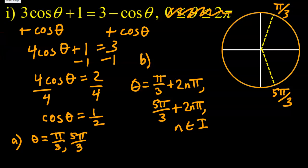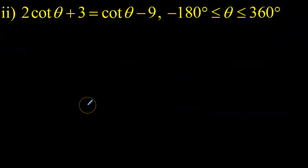So let's move on to the next example. And in the next example, we've got 2cot(θ) + 3 = cot(θ) - 9. First, we're going to solve this on the specified domain from -180° to 360°. And then we're going to come up with the general solution.